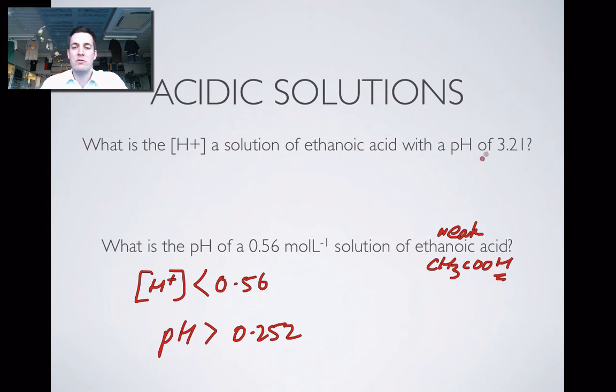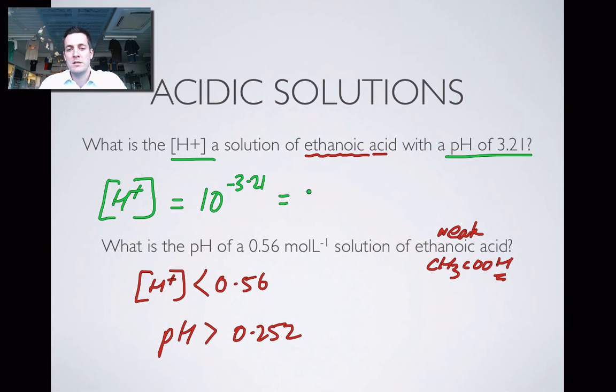And now here's the reverse kind of problem, also dealing with ethanoic acid. So you might think we can't be very precise about this, but we're asked for the H+ ion concentration and we're given the pH, and we can do that precisely. So the concentration of H+ is 10 to the minus pH, and that's 10 to the minus 3.21, and that equals 6.17 times 10 to the minus 4 moles per liter.